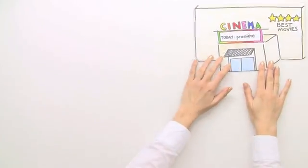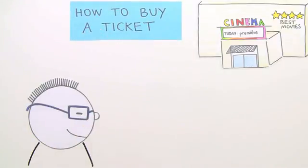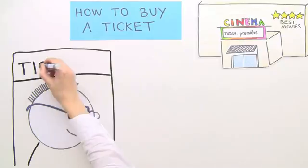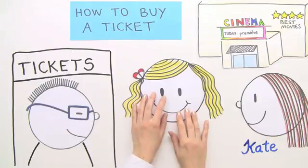Now, we're going to have a look at how to buy a cinema ticket. This is Kate. She wants to buy two tickets, one for her and one for her friend, Lisa.